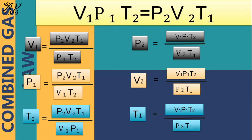In solving for the final volume: V₂ = (V₁ × P₁ × T₂) / (P₂ × T₁). And in solving for the initial temperature: T₁ = (V₁ × P₁ × T₂) / (V₂ × P₂).